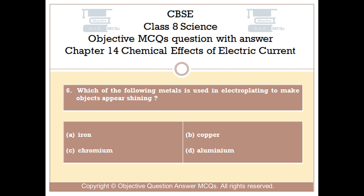Question number 6. Which one of the following metals is used in electroplating to make objects appear shining? Option A iron, Option B copper, Option C chromium, Option D aluminium.